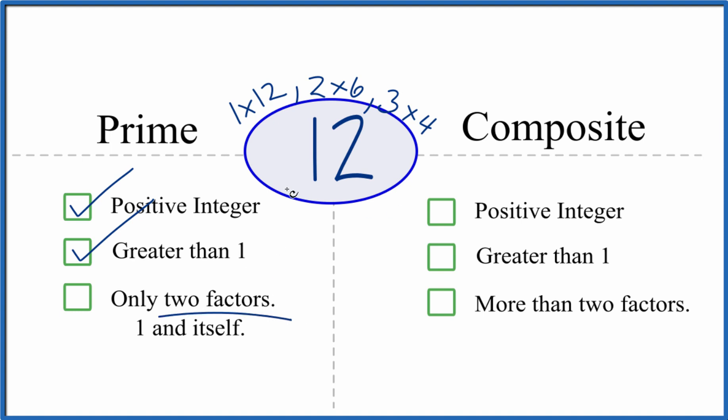So there are more than two factors that divide evenly into 12. So 12, that's not a prime number. And when you have an even number, unless it's 2, even numbers, they won't be prime.